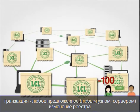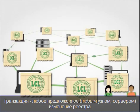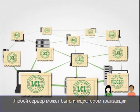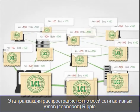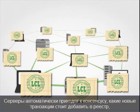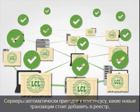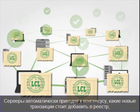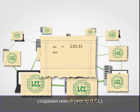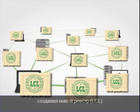A transaction is any proposed change to the ledger. Any server can introduce a transaction to the network. These transactions go out to all active Ripple servers. The servers automatically come to consensus about a set of transactions to apply to the ledger, creating a new last closed ledger.